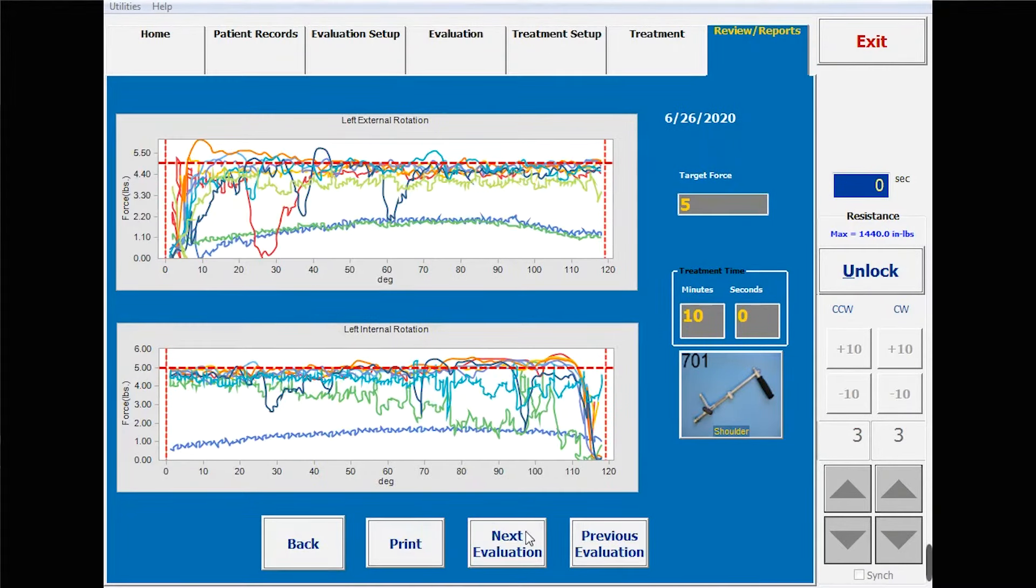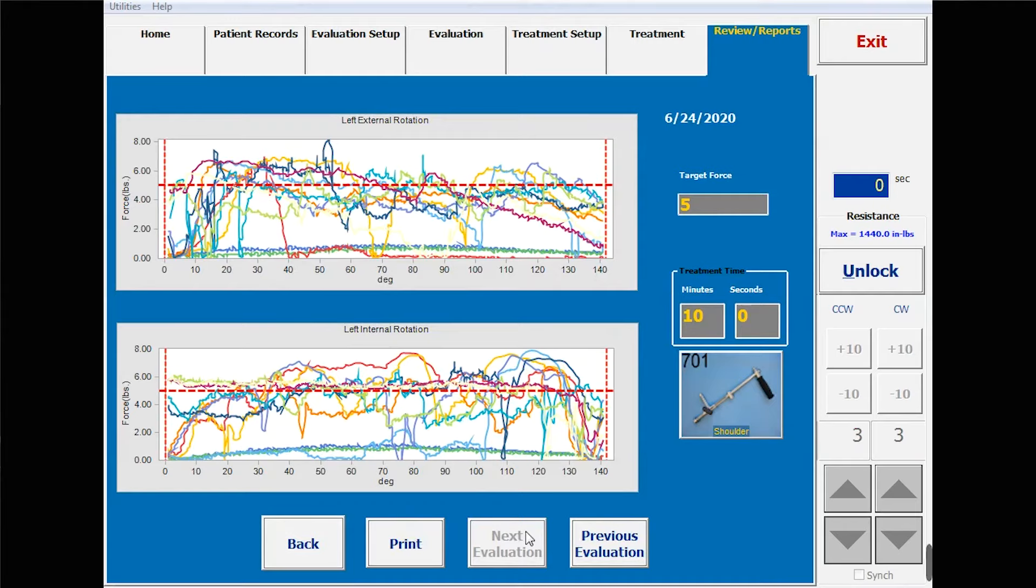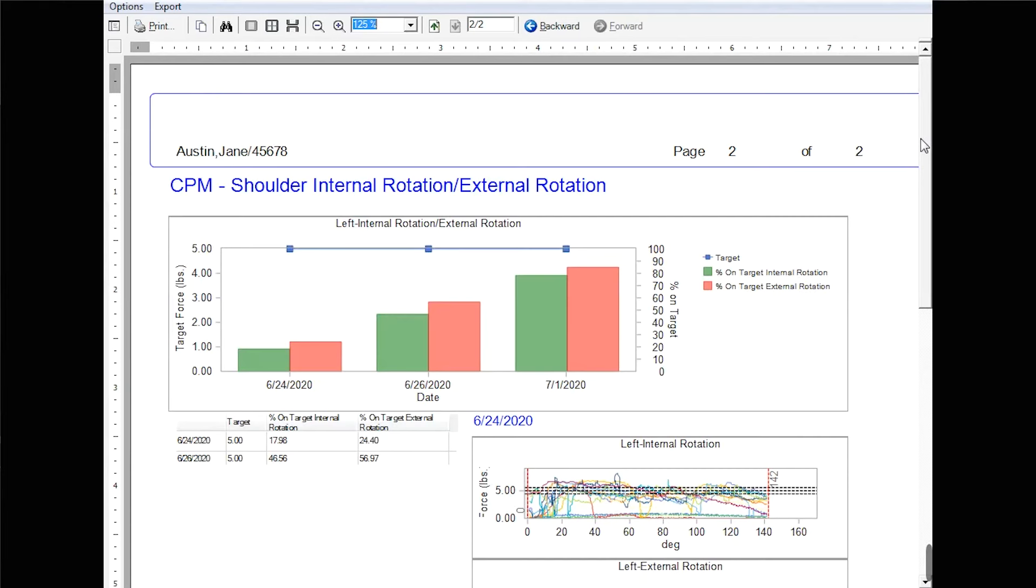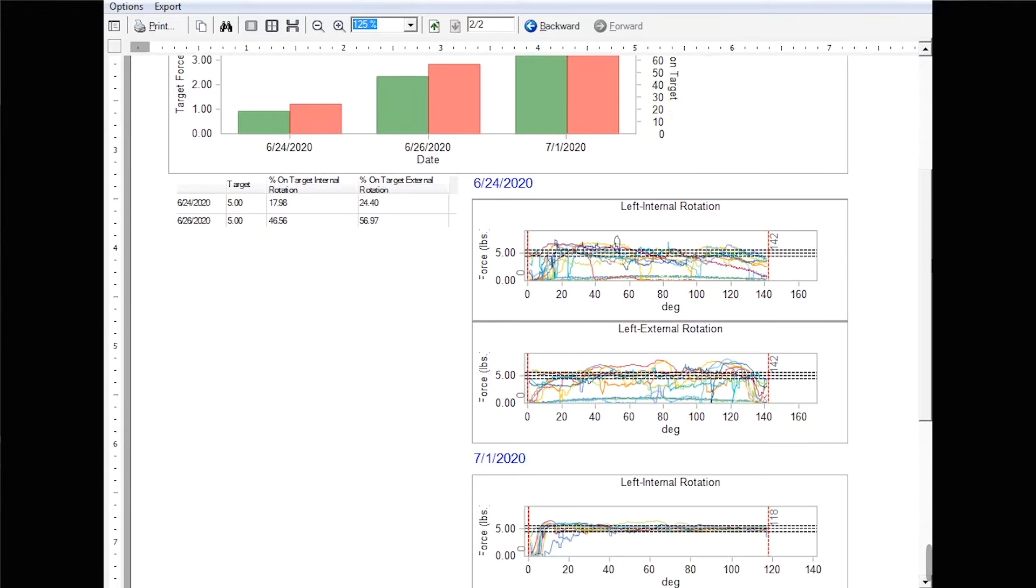The primus will track the client's performance for individual sessions and for multiple sessions, so you'll get easy-to-read progress reports that show the average force and how they performed in the target range for each exercise.